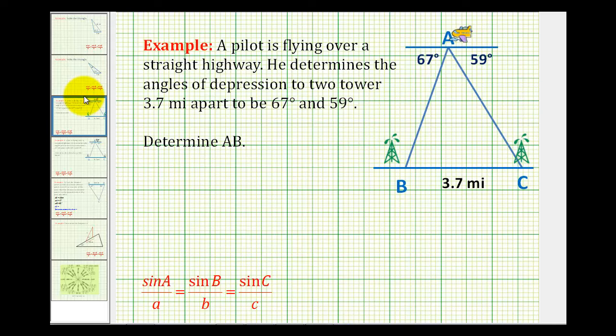A pilot is flying over a straight highway. He determines the angles of depression to two towers 3.7 miles apart to be 67 degrees and 59 degrees. So the situation can be modeled by this diagram here. We're actually going to answer two questions based upon this diagram.